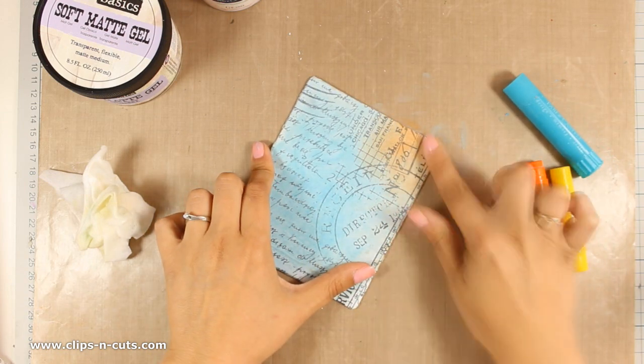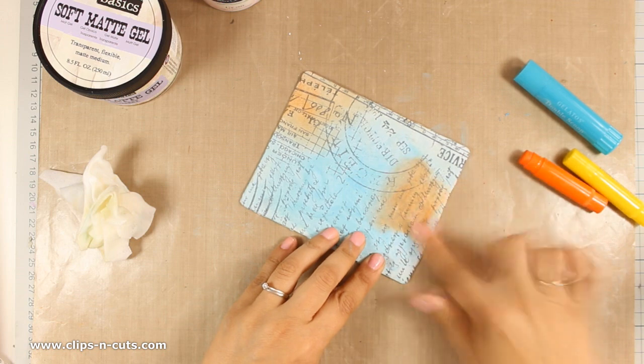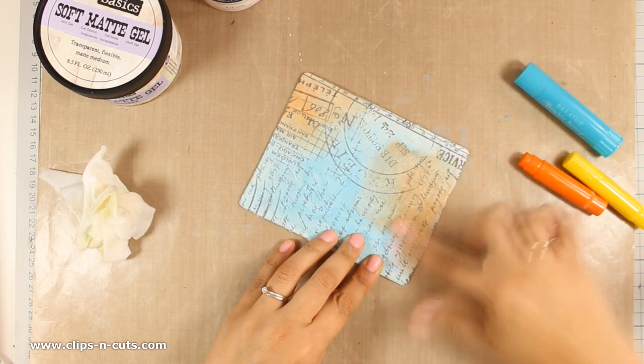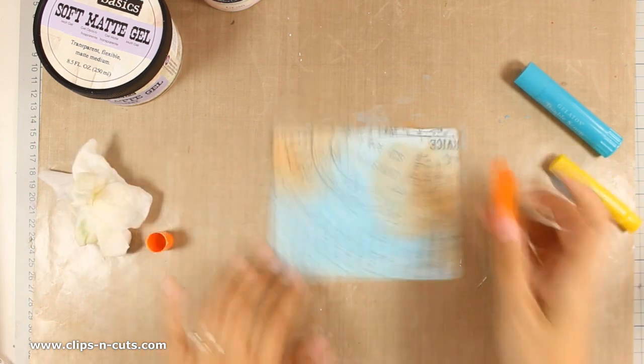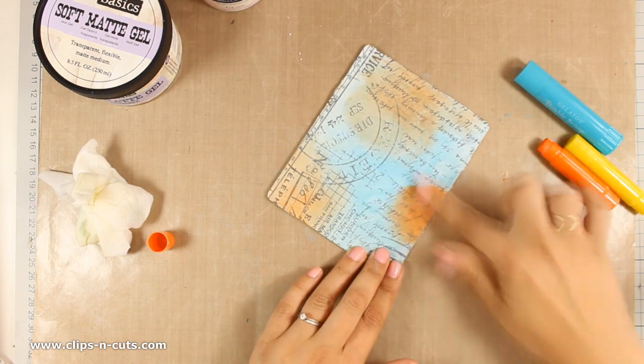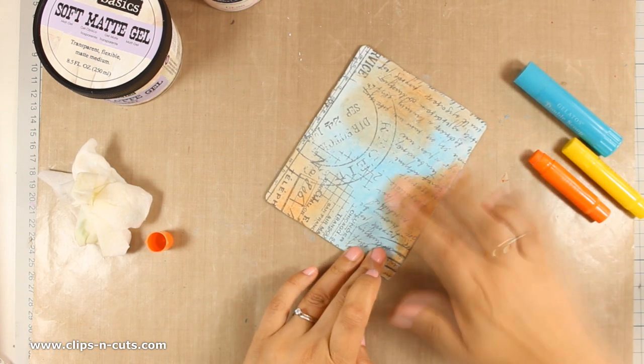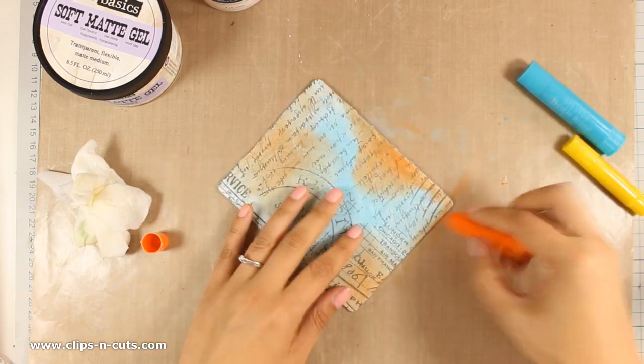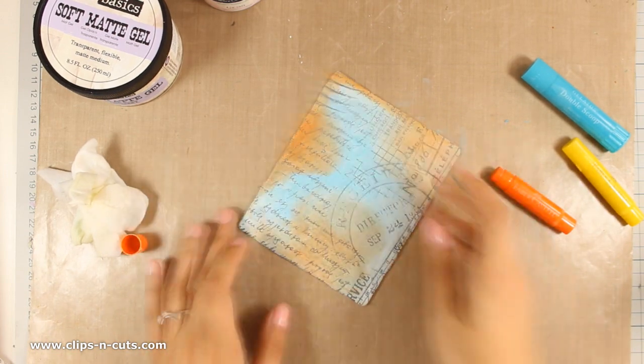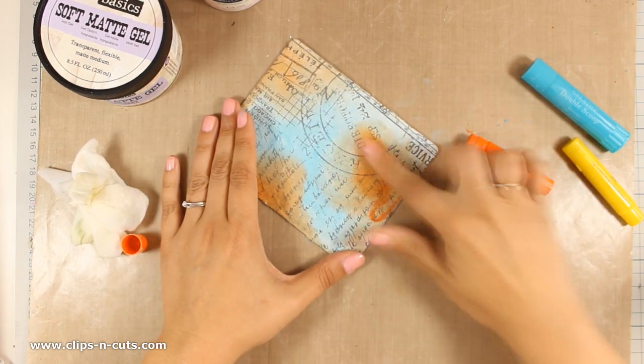Now I am going to use orange gelato. If you know your color theory, then you know that orange and blue make brown. However, I am not afraid to do that because this will not turn into mud just because gelatos are really great medium to work with.